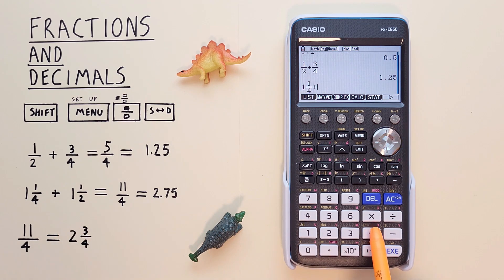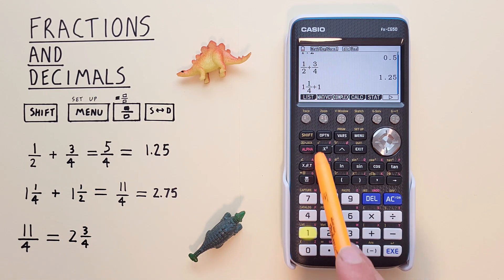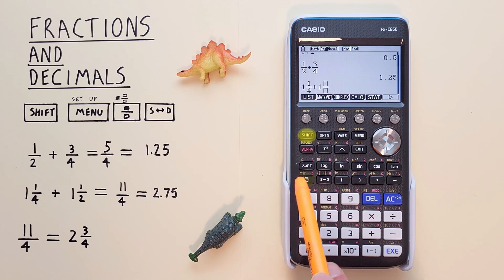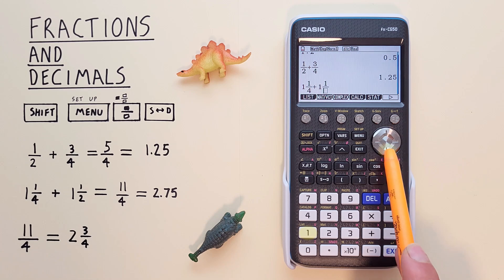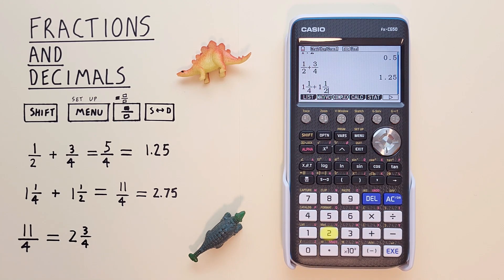And then plus 1 and 1 over 2. So again, 1 SHIFT fraction. 1, the top box, scroll down, the 2, and hit exe.